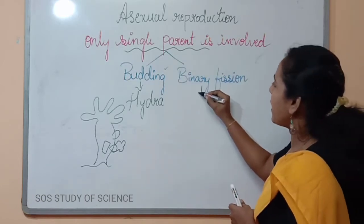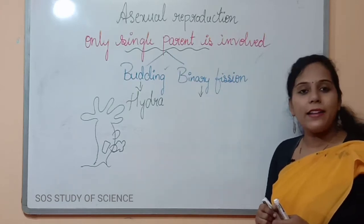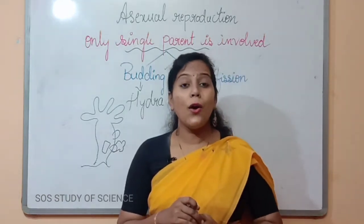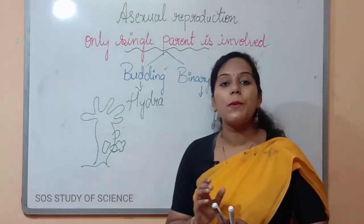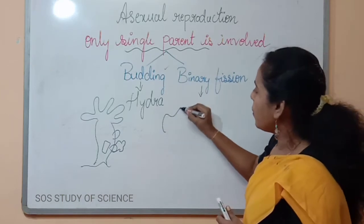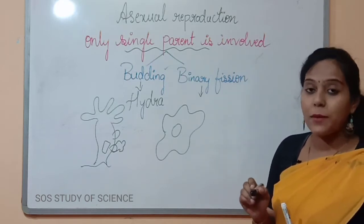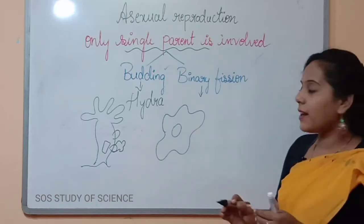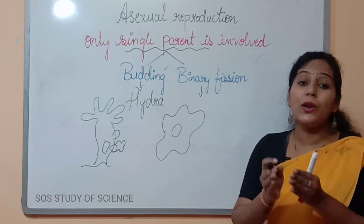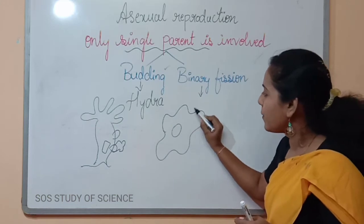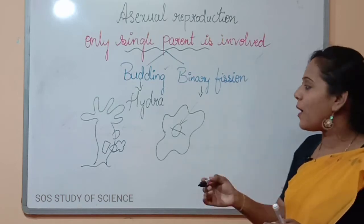Next, let us understand the second type of asexual reproduction: binary fission. You are all aware of amoeba and know its structure. How does asexual reproduction take place in the amoeba? Amoeba has a pseudocoelomate body — that means it has a false body cavity. This amoeba makes its own reproduction by dividing the nucleus itself. There is a nucleus present inside the amoeba, and the nucleus itself divides.